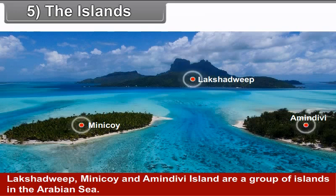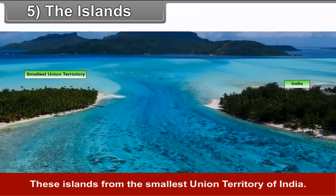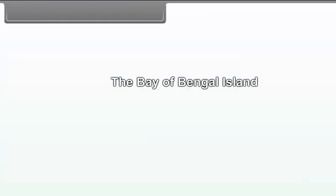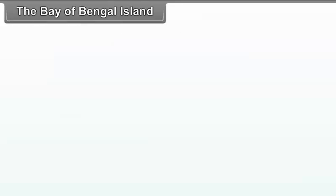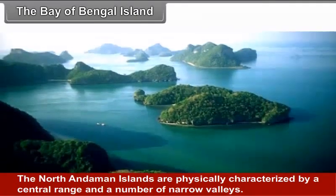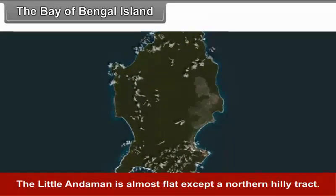There are two groups of islands: the Arabian Sea Islands and the Bay of Bengal Islands. Lakshadweep, Minikoy and Amindivi Islands are a group of islands in the Arabian Sea, located 200 to 440 km off the southwestern coast of India. These islands form the smallest union territory of India, with a total surface area of 32 square kilometres. Kavaratti is the capital of this union territory.